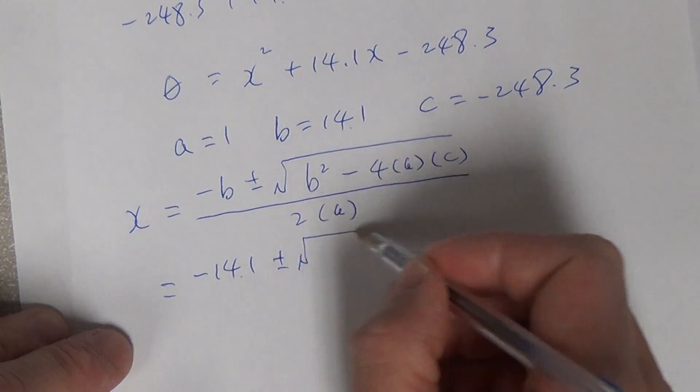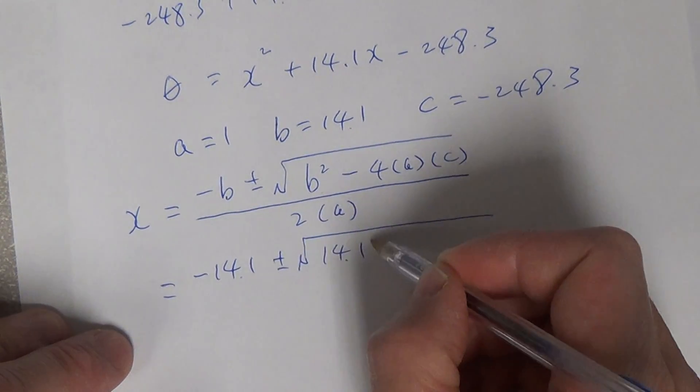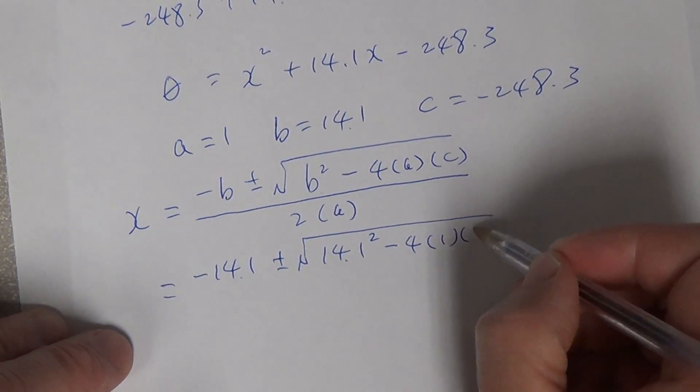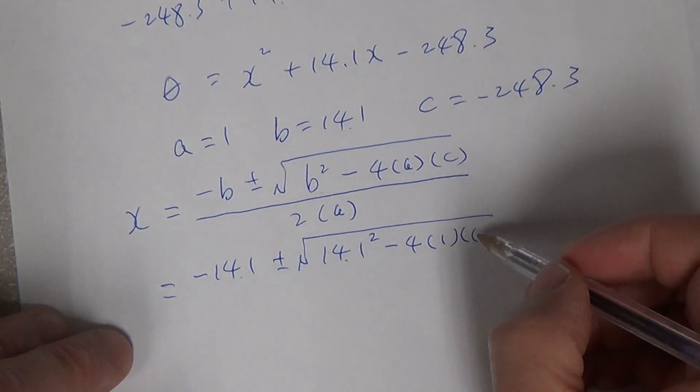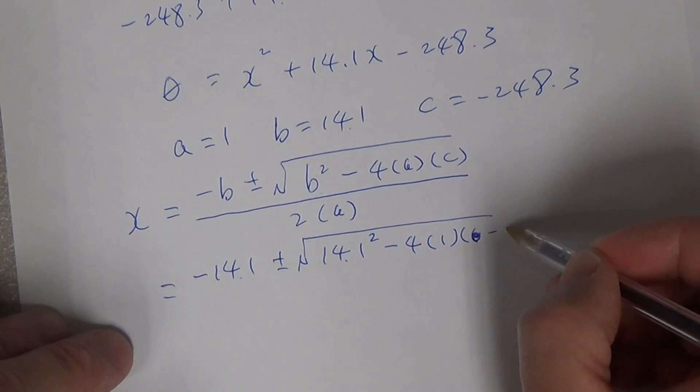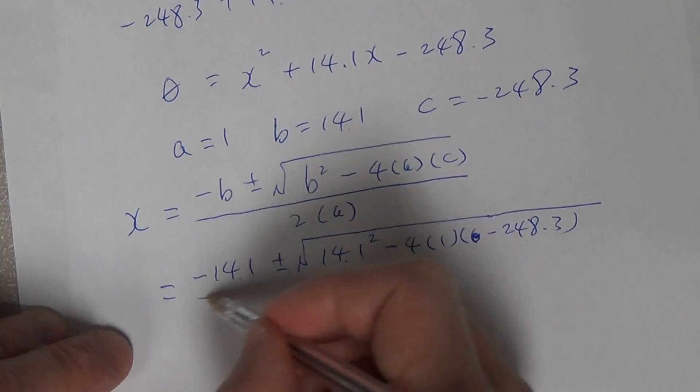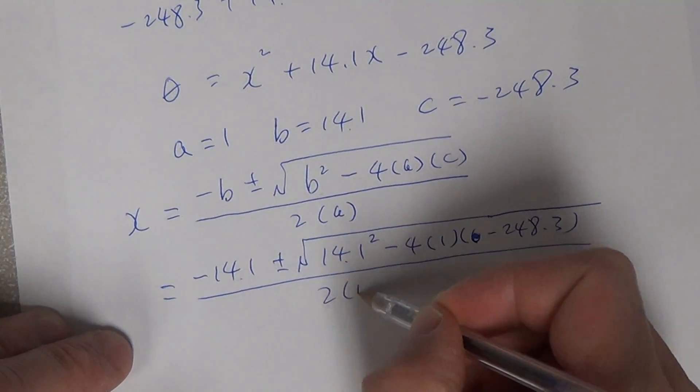1 plus minus the square root over 14.1 squared minus 4 times 1, which is a, c becomes negative 248.3, then divided by 2 times 1.